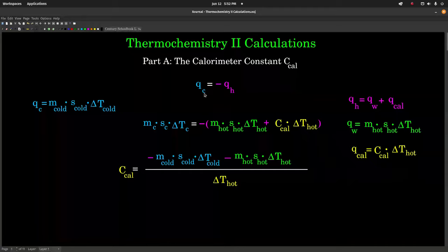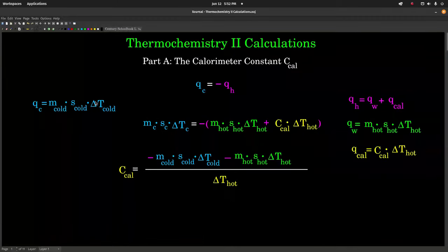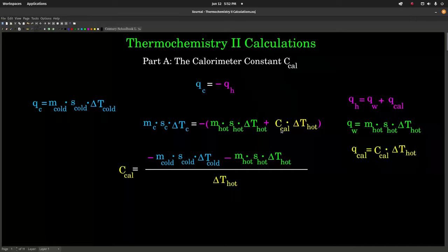We can write Q as mSΔT. For the cold, it's the mass of the cold water, specific heat of the cold water, and delta T of the cold water. For the hot, it's mSΔT of the hot water plus the calorimeter constant — which is just the heat capacity of the calorimeter that we want to find in this part — times delta T of the hot.